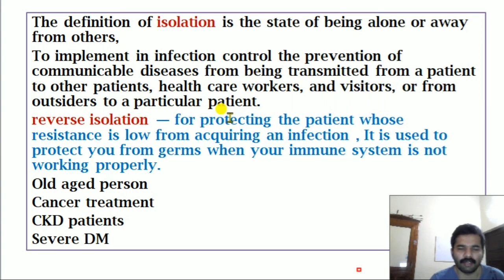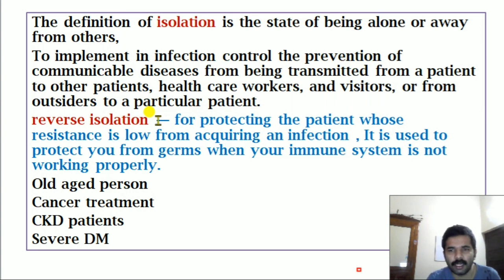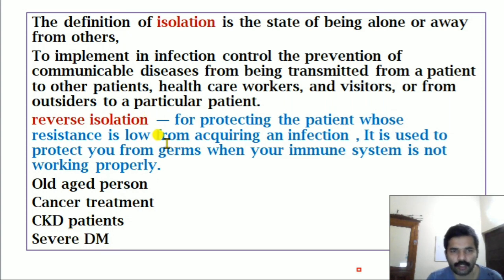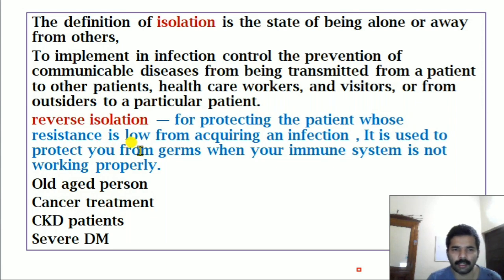Reverse isolation is used for protecting the patient whose resistance is low from acquiring an infection. It is used to protect you from germs when your immune system is not working properly. Reverse isolation usually protects old age persons and low immunity patients — like cancer treatment patients, chronic kidney disease patients, and severe diabetic mellitus patients — from infection.